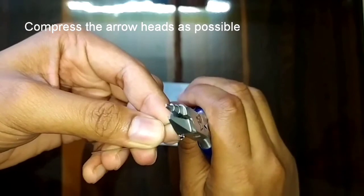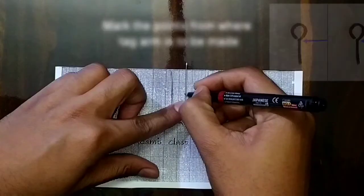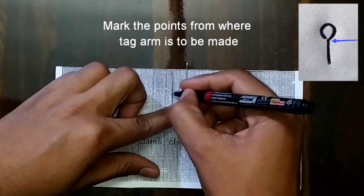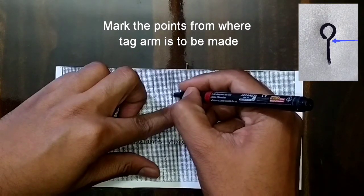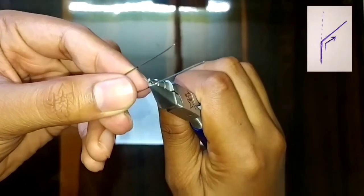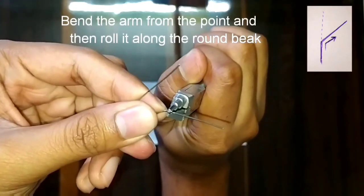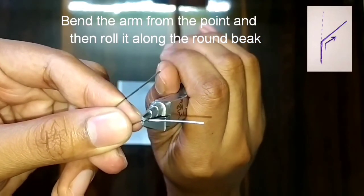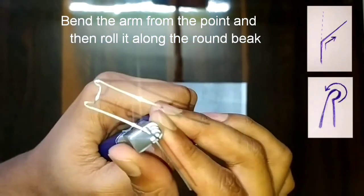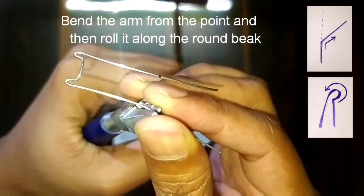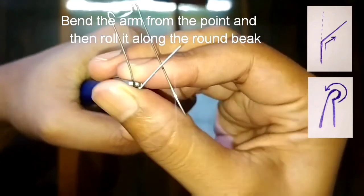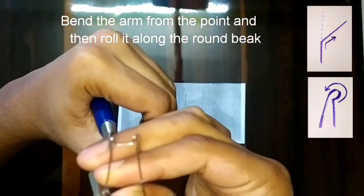Try to make it a bit sharp. We will mark the points on the retentive arm from where the tag arm is to be made. For making the tag arm, we will first bend the wire from the point towards outside as shown in the figure, then roll the wire along the round beak as shown. Do it from the tip so that the smallest curvature could be given to the tag.